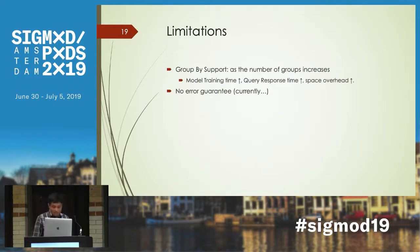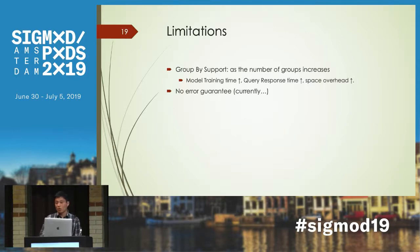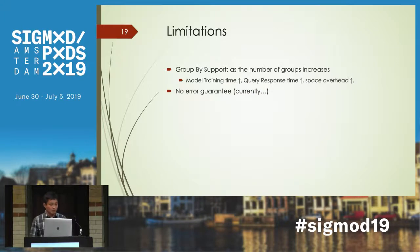DBS also has some limitations. For group by support, as the number of groups increases, we need to build more models, so model training time increases, query response time increases, and space overhead increases. There is also no error guarantee, and we are currently working on it.